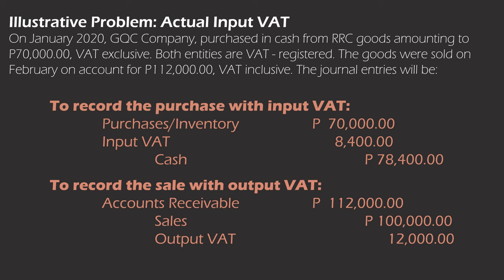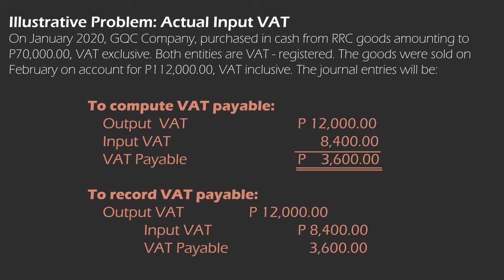To record the sale with output VAT: debit accounts receivable 112,000; credit sales 100,000 and output VAT 12,000. To compute VAT payable, we compare output VAT of 12,000 and input VAT of 8,400, giving VAT payable of 3,600. To record VAT payable: debit output VAT 12,000; credit input VAT 8,400 and VAT payable 3,600.